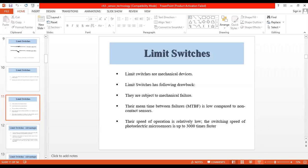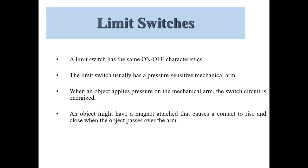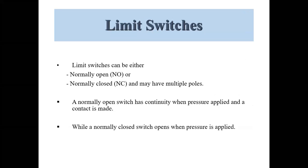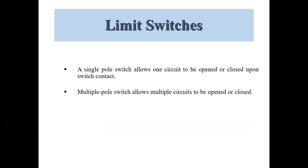Welcome back. Last time we discussed limit switches. Limit switches have an on and off characteristic and usually have a pressure-sensitive mechanical arm. Limit switches can be either normally open or normally closed and may have multiple poles. A single pole switch allows one circuit to be opened or closed, while a multiple pole switch allows multiple circuits to be opened or closed.